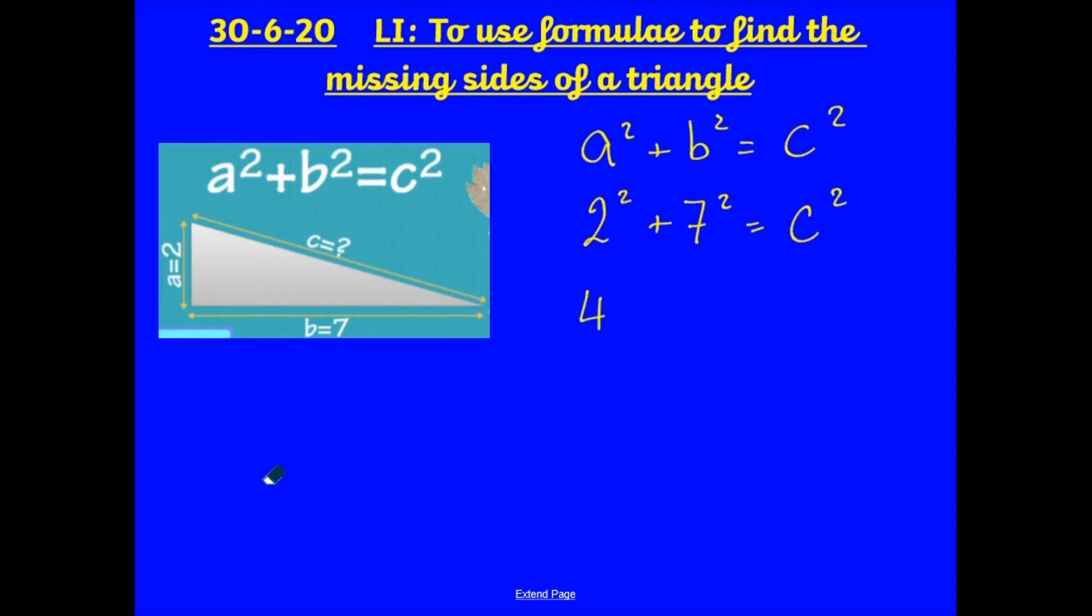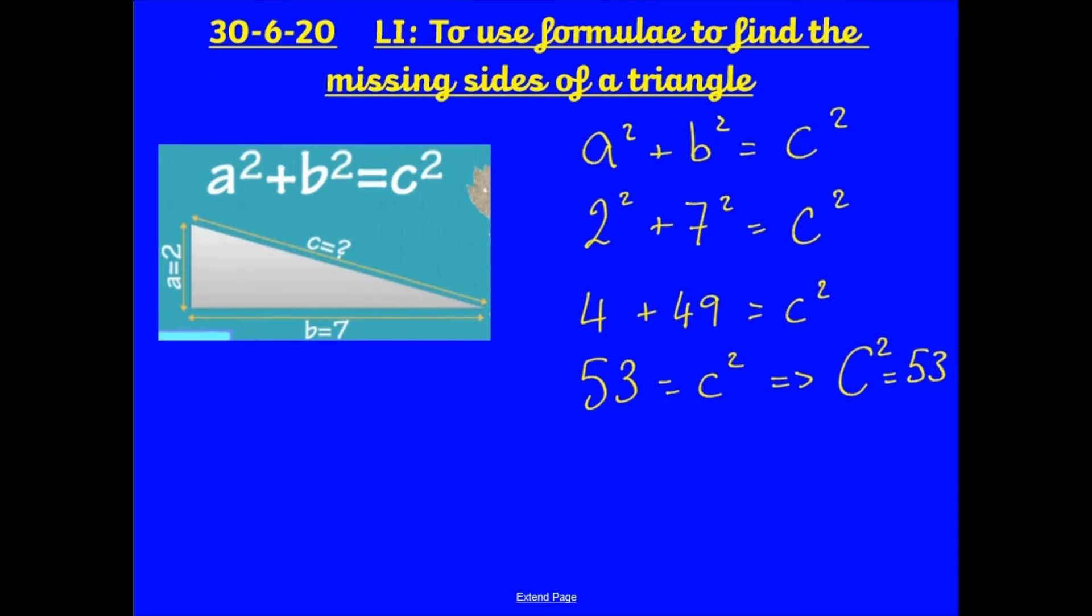2 times 2, that is 4. Plus 7 times 7, that is 49, is equal to c². 4 + 49 is going to give me 53, is equal to c². Again, to make that easier, I'm just going to flip that around. So, c² = 53. And I just need to find out what c is alone.